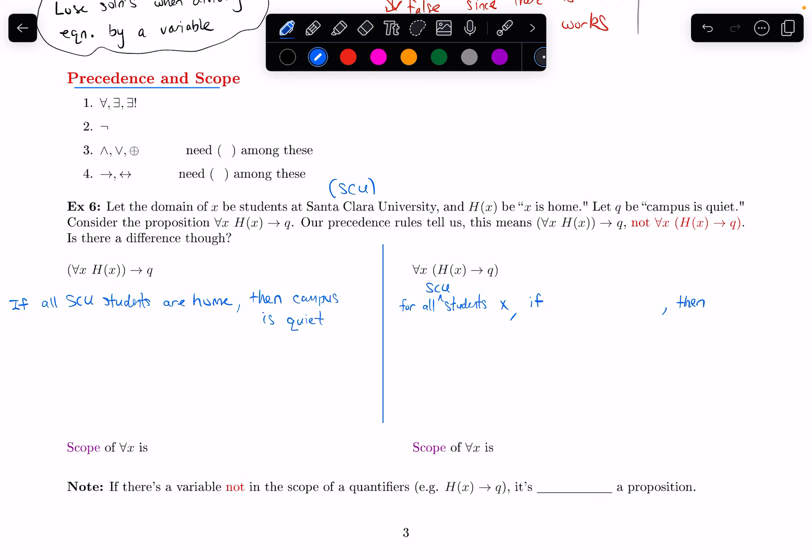So I'll have if some stuff, then some stuff. And the if portion says H(x), so that's saying X is home. So if X is home, then Q, then campus is quiet.